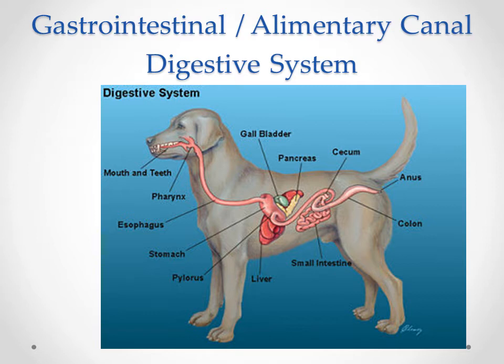Our patient prehends and chews the food in the oral cavity. As it's swallowing, it passes through the pharynx and down into the esophagus, then from the esophagus to the cardiac sphincter of the stomach, where the beginning initial stages of breakdown and digestion occur. Then through the pylorus, the pyloric sphincter, into the small intestine — consisting of the duodenum, jejunum, and ileum.